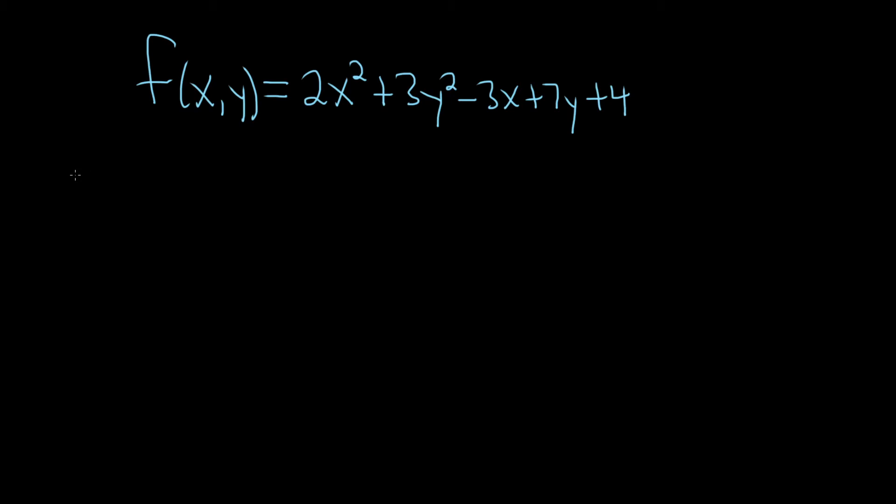So let me show you what that definition is. If you want del f del x of our function f at x,y, this is equal to the limit as h approaches 0 of the following quantity. It'll be f of x plus h, just like the regular definition, but then we hold y constant. So minus f of x,y.